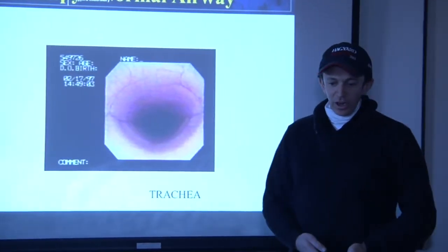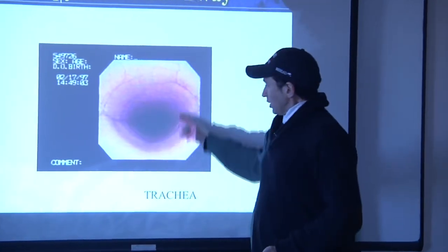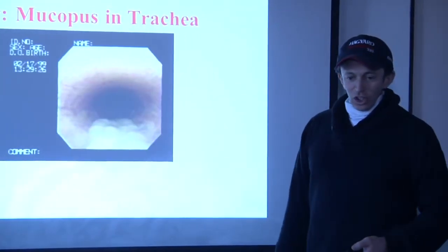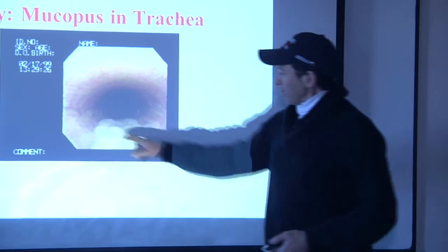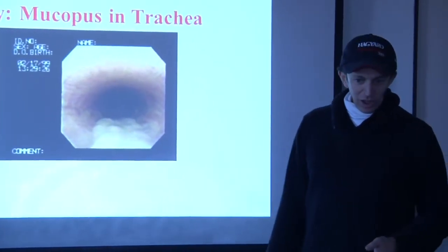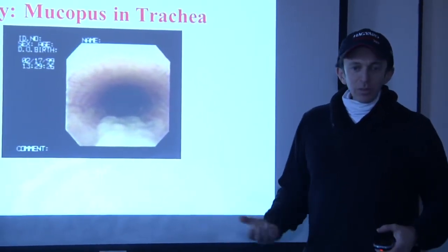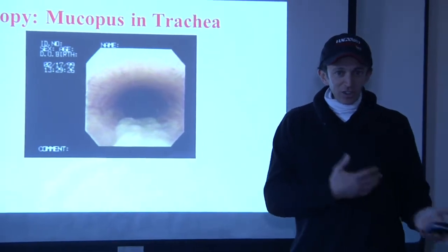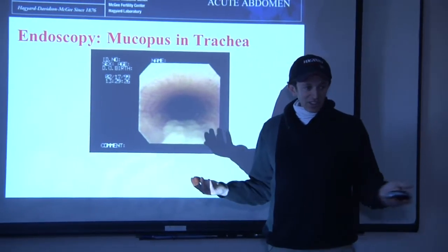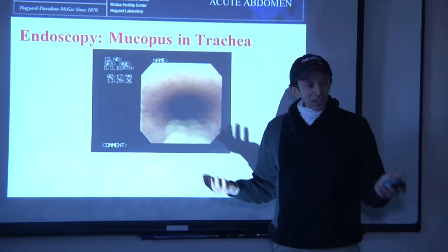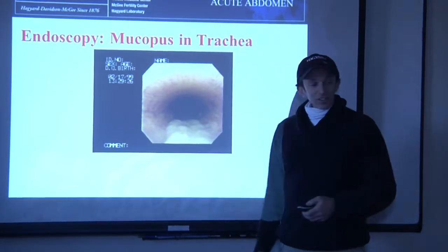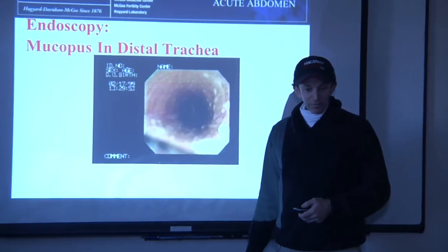Endoscopy of the normal airway: look at the trachea — it's nice and clean, there's nothing there. Now look at this one. Look at that mucus. That's what we call excessive mucopus. We call it mucopus because we don't know if it's infectious or just pure mucus — it all looks the same until you sample it and look under the microscope. If your horse has this, you have small airway inflammation. Guarantee it.